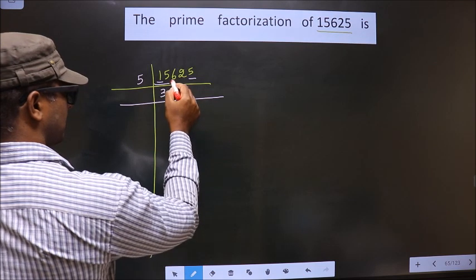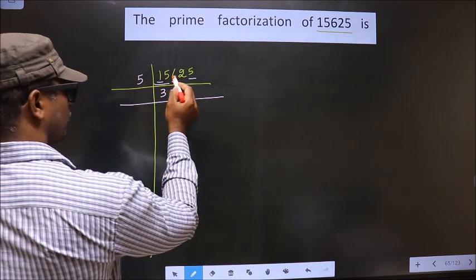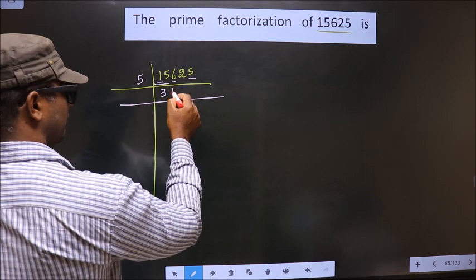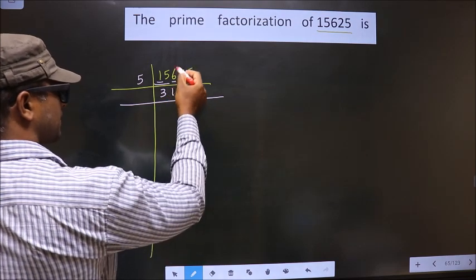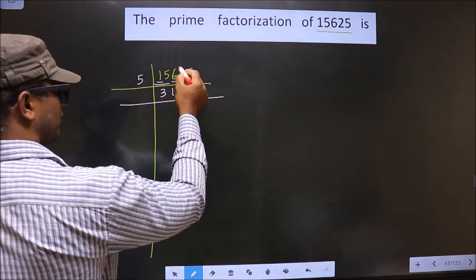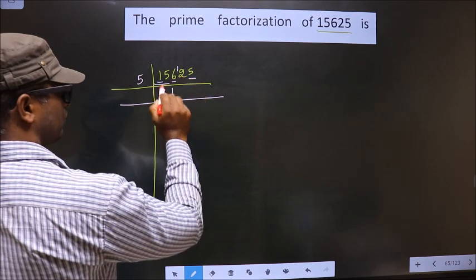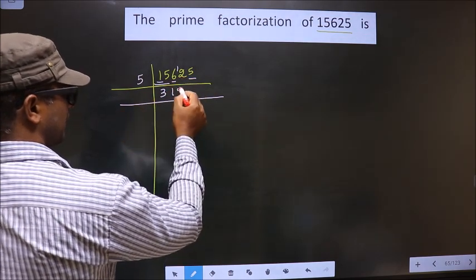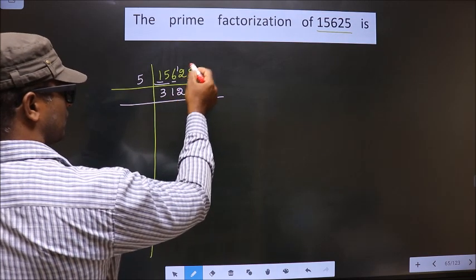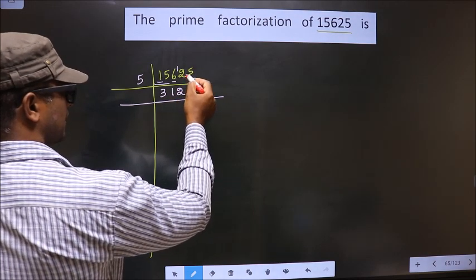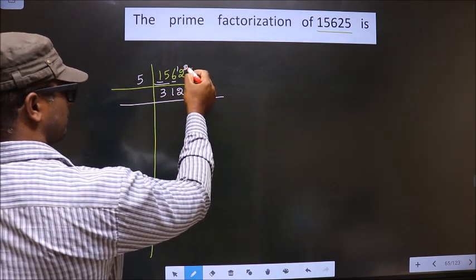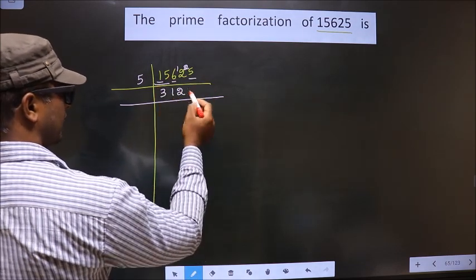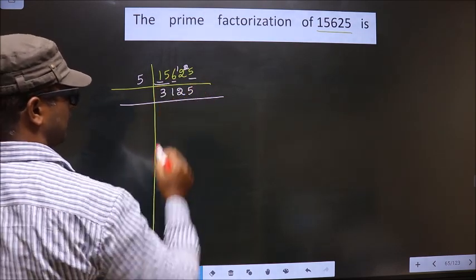Now the next number is 6. Close to 6 in the 5 table is 5 once, which is 5. 6 minus 5 is 1, carried forward making it 12. Close to 12 in the 5 table is 5 times 2 is 10. 12 minus 10 is 2, carried forward making it 25. When do you get 25 in the 5 table? 5 times 5 is 25.